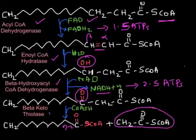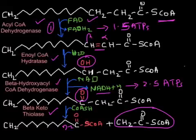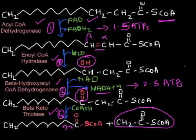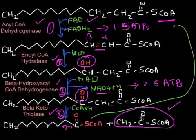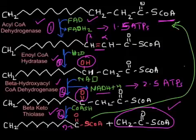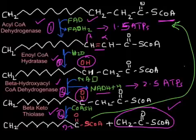The fourth enzyme, beta-ketothiolase, cleaves the beta-keto molecule, releasing one acetyl-CoA and a fatty acid shortened by two carbons (N−2 carbons). After these four reactions, the shortened fatty acid re-enters the cycle for another round of beta oxidation, releasing two more carbons as acetyl-CoA. This repeats until the entire fatty acid is broken down.